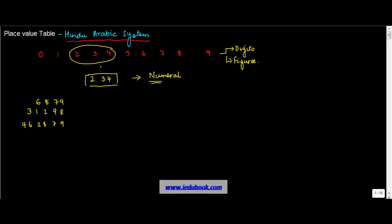The place value system, or the place value table as we call it, is used to denote the number. When you have to represent a particular number — let's say 6, 8, 7, 9 — the place value system basically tells you what a particular figure in a numeral represents. When you start, you move from the extreme right.